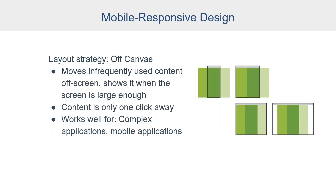The last pattern is Off Canvas. Some content, like navigation or menus, isn't used very frequently. In this pattern, that content is shown when the screen size is large enough, but on smaller screens the content is moved off screen instead of stacking it vertically. On smaller screens, the content is only one click away, so it's still convenient for the user. Off Canvas works really well for complex applications and mobile applications where you don't want a lot of scrolling — you can click a quick button to bring out that content in the same view without having to scroll, but everything is available on demand.